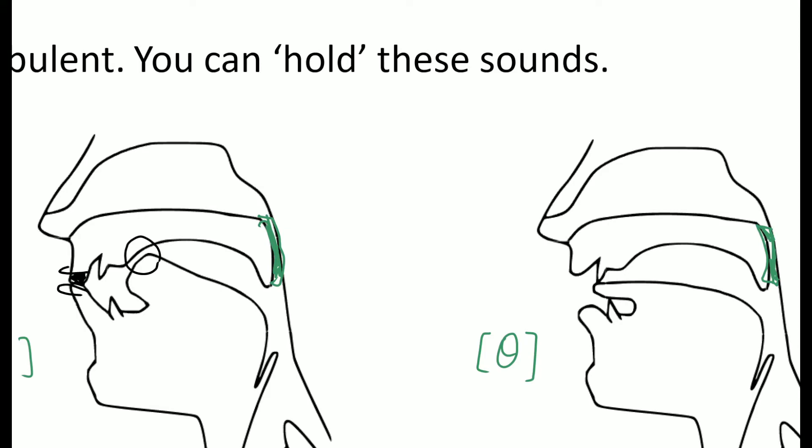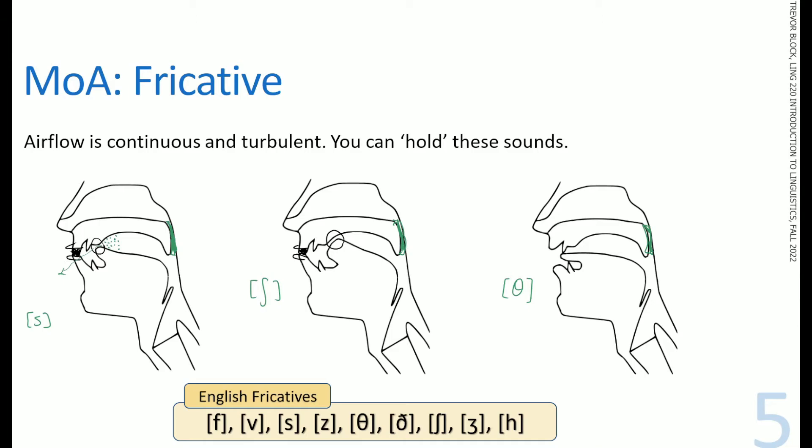But that's because with these interdental and labiodental sounds, th and v, you are making contact, but air is escaping either through the sides of the lips, the side of the teeth. It's exiting not directly in the center. So it's a little bit more difficult to draw a diagram for that.